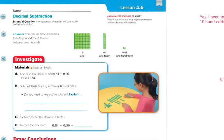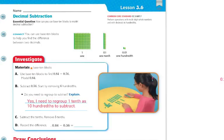Let's explain. Yes, I do need to regroup the 1 tenth as 10 hundredths to subtract. Just like when you're doing a problem that's not using tenths or hundredths — if the number on the bottom is bigger than the number on the top, then you're going to need to regroup. Subtract the tenths and remove the 5 tenths. Record the difference.